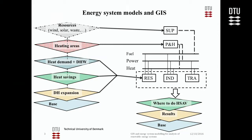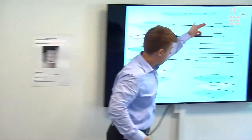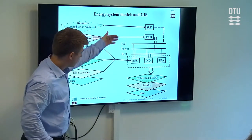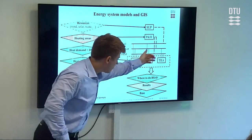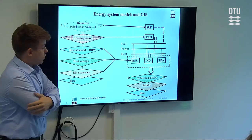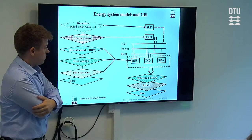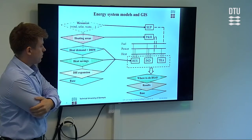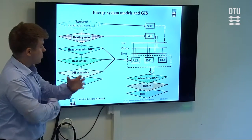Energy System Models and GIS — is it necessary and why do we do that? In this illustration, GIS is located on the left side while a simple representation of the energy system is on the right side. We have a supply sector and a power and heat sector, which deliver fuels, power, and heat to residential, industrial, and transport sectors. Do we really need GIS for this? No — we can build an energy system model directly from statistics, but then we'll miss important things which are geographical in nature.